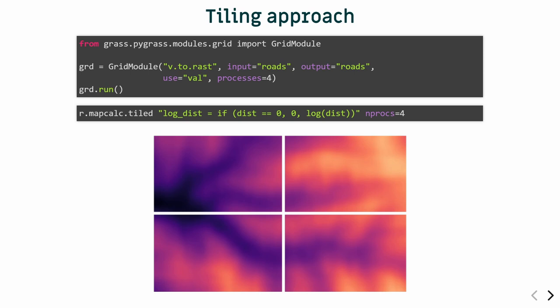Another approach is tiling, where you can use the g.grid module in GRASS, which will conveniently wrap all the tiling computation per tile in parallel and then merge the data back. This is not suitable for some types of computations like watershed modeling, but it works very well for others. You can also specify overlap so that edges are correctly computed. There is also a wrapper for raster algebra called r.mapcalc.tiled, which has completely the same syntax as r.mapcalc but runs it in parallel.